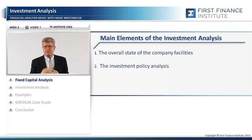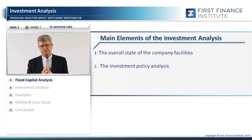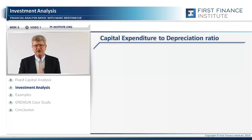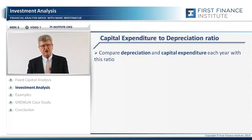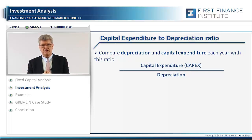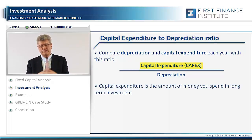Let's now look at the second important issue with fixed capital: the company's investment policy and its consistency with its overall growth strategy. One easy way of looking at this is to compare the amount of depreciation of the period to the level of capital expenditure in the same period. In other words, the ratio is capital expenditure — capex, as we'll be saying very often — divided by depreciation.